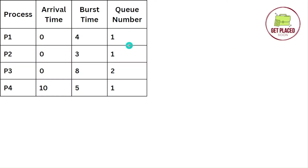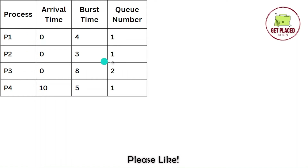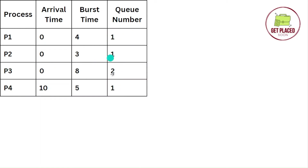As you can see here, we have four processes P1, P2, P3, and P4, and their arrival times and burst times are given. We have two queues, and all four processes are assigned to these two queues respectively — Q1 and Q2. P3 belongs to Q2, and the rest of the processes belong to Q1.